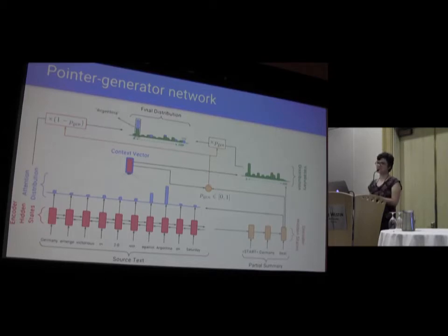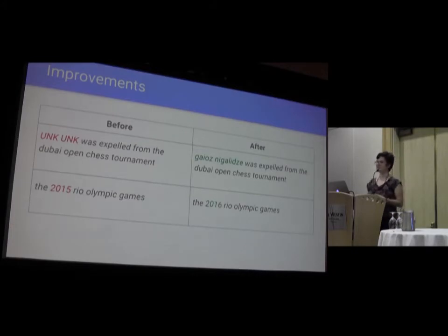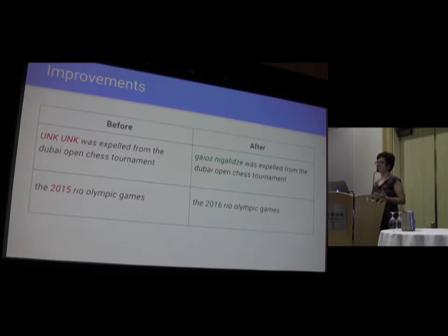On this step, that output might be Argentina — chosen both because it has a high probability of being copied and a high probability of being generated. So it's not a hard binary decision; it's a soft switch. By using the pointer generator network, we get some improvements. Whereas before we might have had unknown tokens because of out-of-vocabulary words, afterwards we're able to correctly copy these words. And whereas before we might be incorrectly substituting a number or a date with another one, afterwards we're able to copy it correctly.